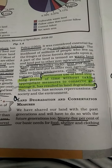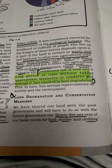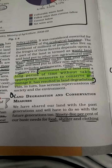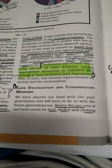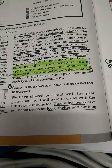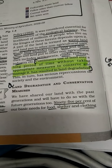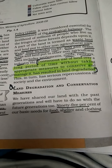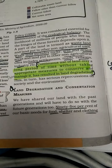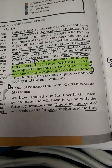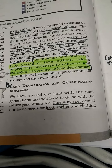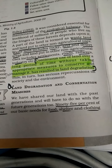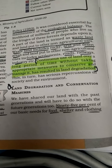Continuous use of land over a long period without taking appropriate measures leads to land degradation. If you don't take appropriate measures, your land will degrade — meaning it goes from a high level of productivity to a low level. This in turn has serious repercussions on society and the environment, making land degradation a major issue.